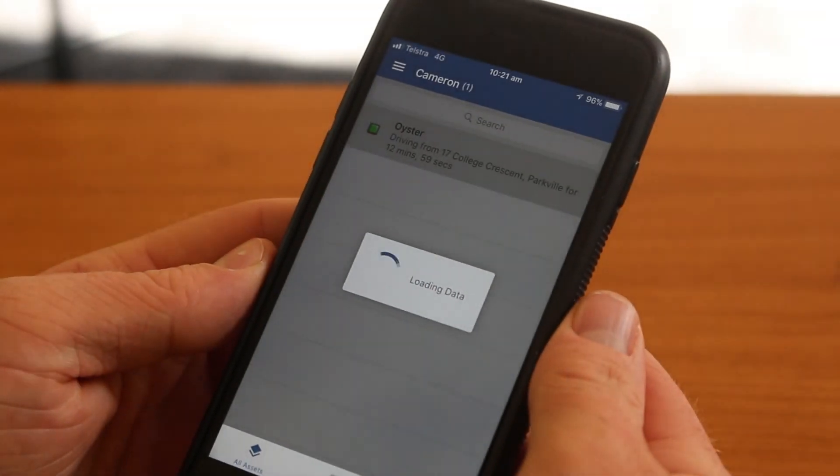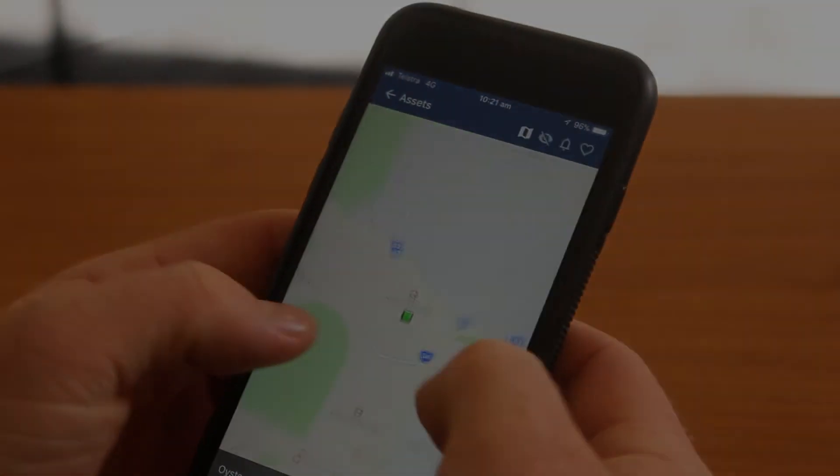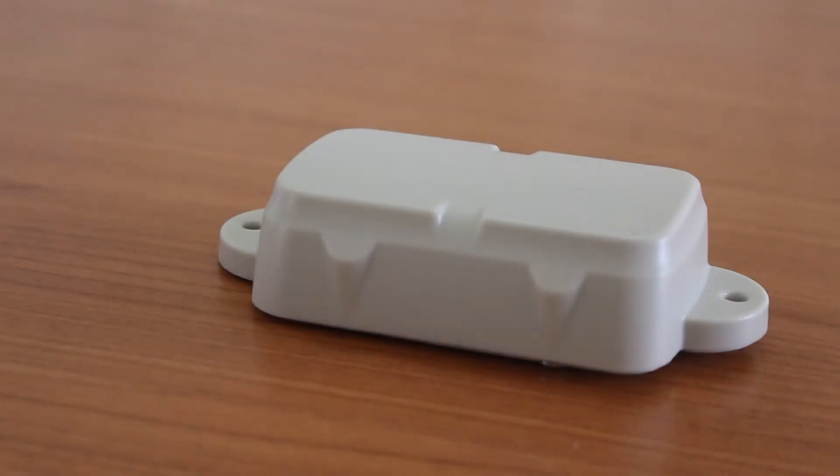Telematics also has a mobile app, which makes tracking assets on the go easy. There, the device is all set up.